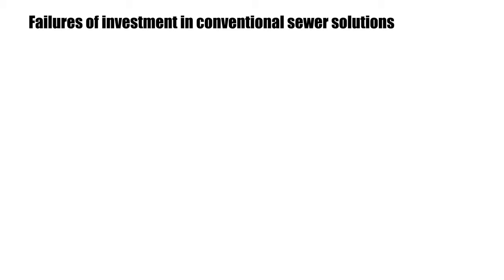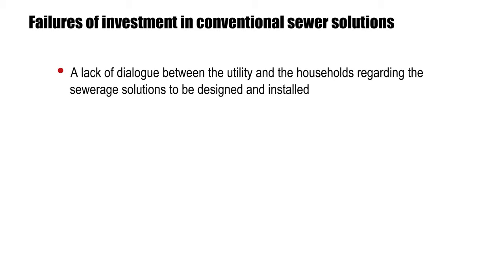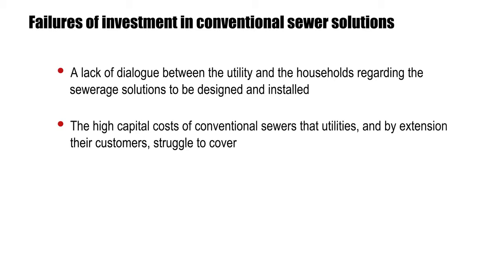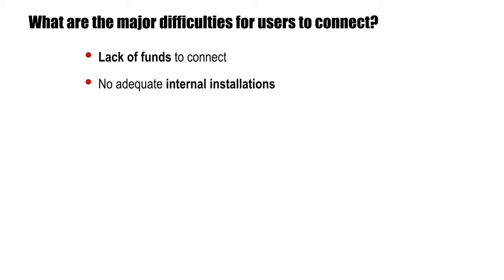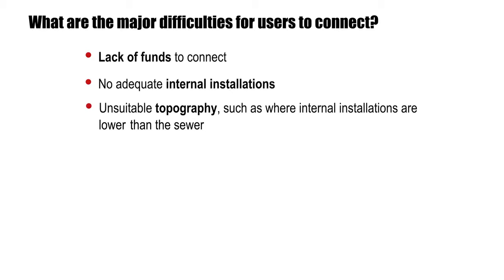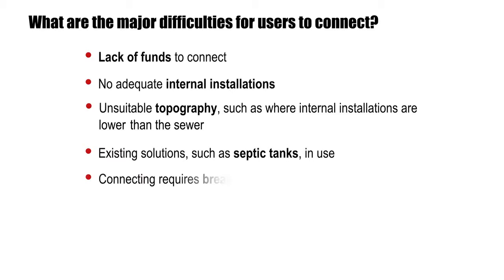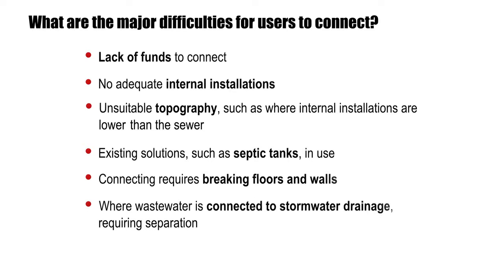Some of the major factors for this failure were a lack of dialogue between the utility and the household, and the high capital costs of conventional sewers. The major reasons that caused users not to connect included a lack of funds in the household to make the piped connection, no adequate internal toilet plumbing installations, the local topography where internal installations are located lower than the sewer lines, existing solutions such as septic tanks already in use where connecting would require breaking floors and walls, or where wastewater was already connected to drainage requiring its separation.